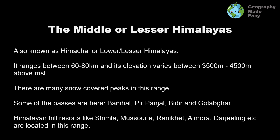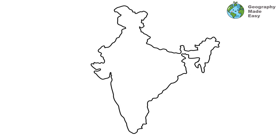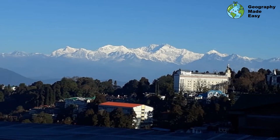Many famous Himalayan hill resorts are located in the Middle Himalayas, including Shimla, Mussoorie, Ranikhet, Almora, and Darjeeling. These hill resorts are neither too cold nor too warm, and beautiful snow-capped mountains of the north can be seen from these places. This is a photo of Kanchenjunga from Darjeeling, a hill resort in the eastern Himalayas in West Bengal.